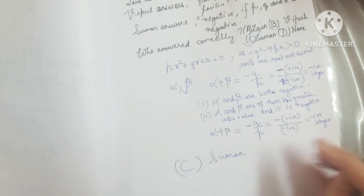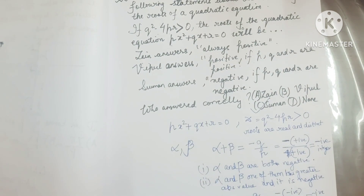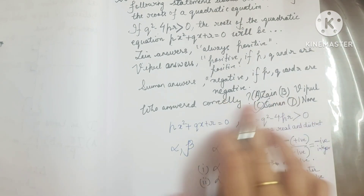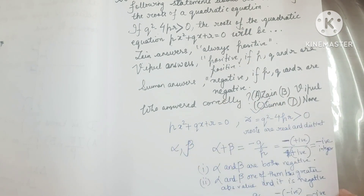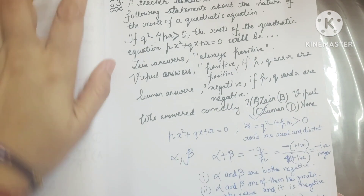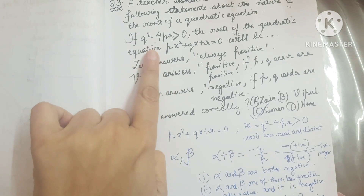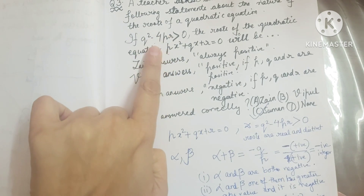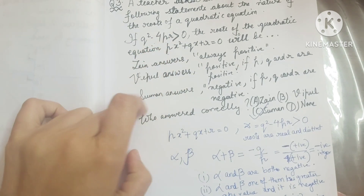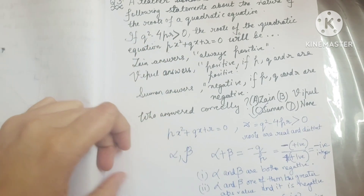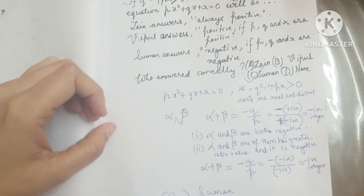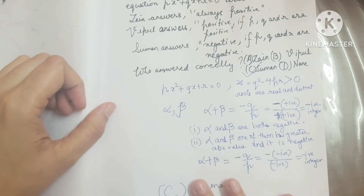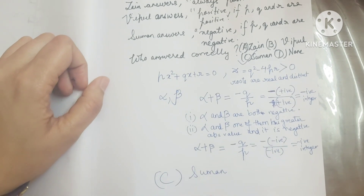So Suman said that the roots of this equation will be negative if p, q and r are negative, when the discriminant is greater than zero — meaning roots are real and distinct. This is correct. So question number 3 answer is C, Suman.